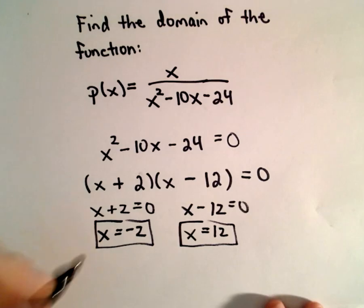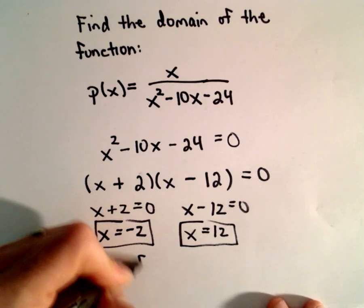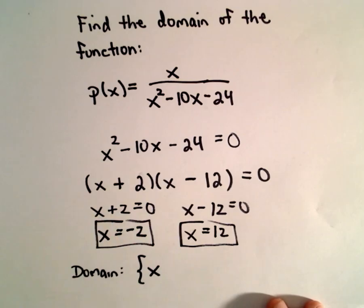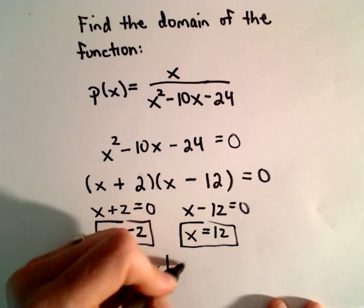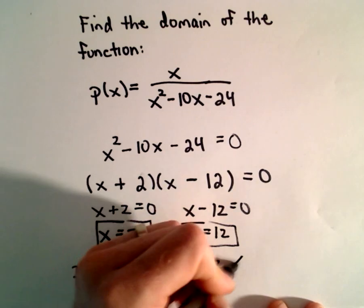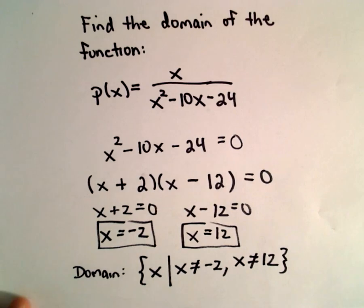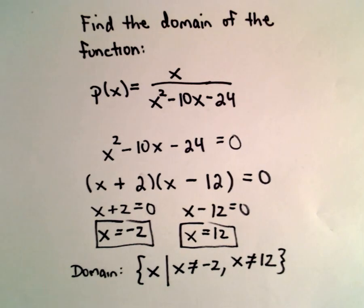So the domain, it'll be all values of x such that x does not equal negative 2, and also x does not equal positive 12. And you could also certainly write this using interval notation, but however you prefer to write it.